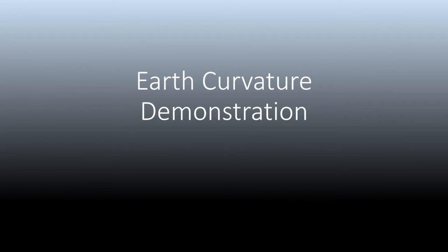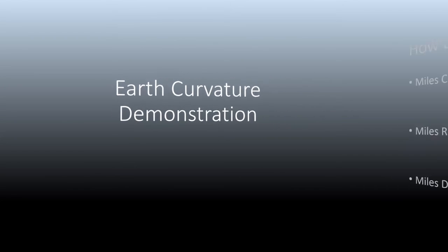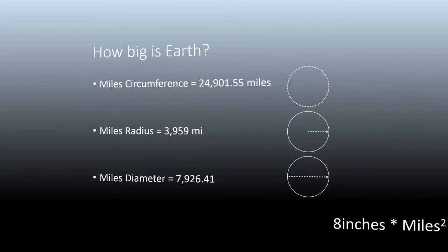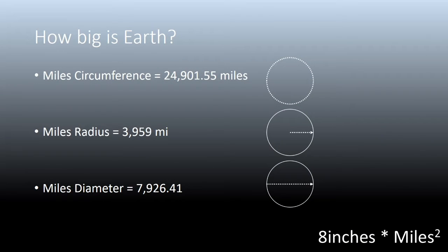This video is an Earth curvature demonstration that attempts to ask the question: how big is the Earth and how round is it? According to modern science, about 25,000 miles in circumference — confirmed by Eratosthenes, who said the Earth was curved based on shadows he calculated from two vertical objects.